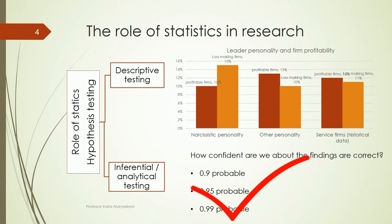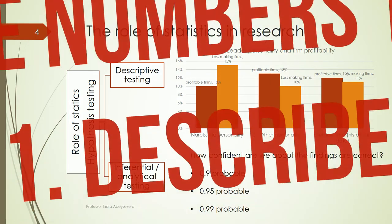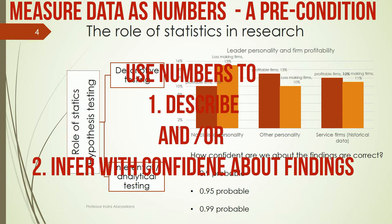We can express that confidence as a probability — 0.90, 0.95, or 0.99 — or as a percentage: 90%, 95%, or 99% probable that our findings are correct. So we use statistics in research to quantify our confidence in our results.